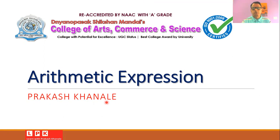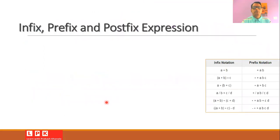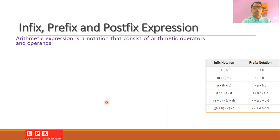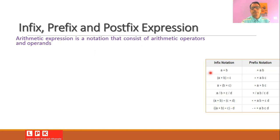Let us start the session with the question: what do we mean by arithmetic expression? An arithmetic expression is a notation which consists of arithmetic operators and operands. For example, instead of writing 'add a and b' as a sentence, it is always better to write it as a plus b. When we write an expression like a plus b, it becomes an arithmetic expression because there are operands a and b, and there is an operator called the plus operator.